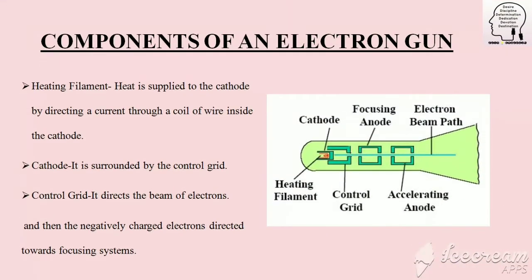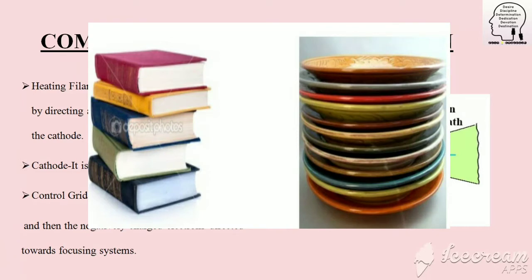There are three components of the electron gun: heating element, cathode, and control grid. There is a coil of wire that will produce heat and negatively charged electrons. There is a cathode, and inside the cathode there is a control grid. These are the negatively charged particles, and this is the focusing system, which will be used on the phosphor coated screen.